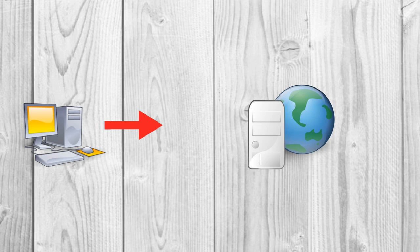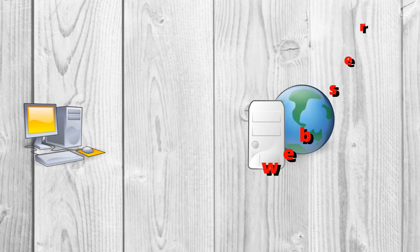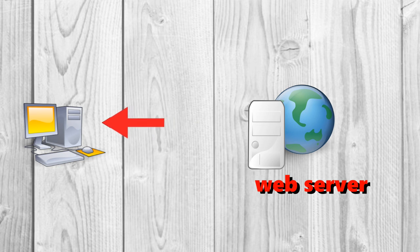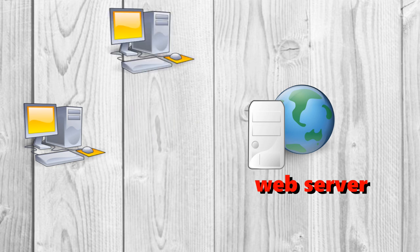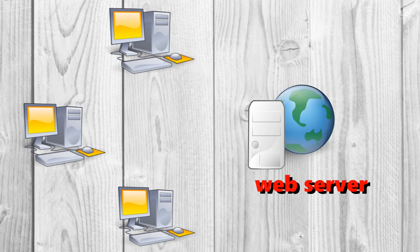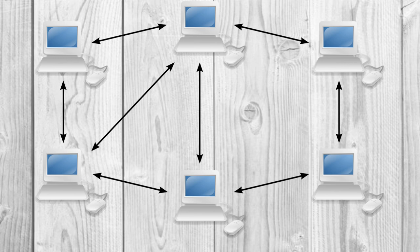Now let's see how torrent works. When you download anything from a website, your computer connects to the web server and downloads the data directly from that server. Each computer that downloads the data downloads it from the web page's central server. This is how much of the traffic on the web works.